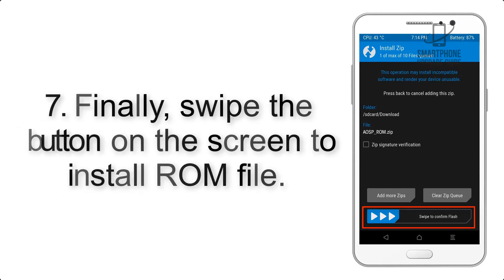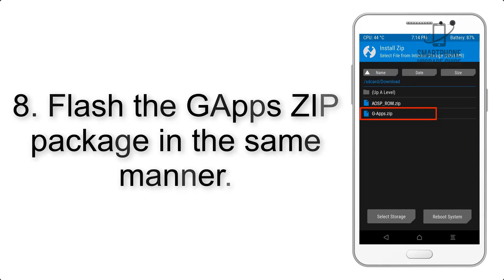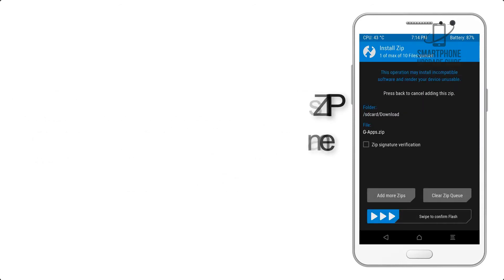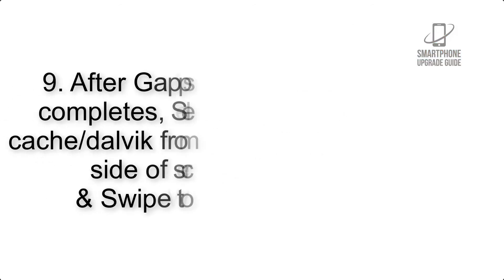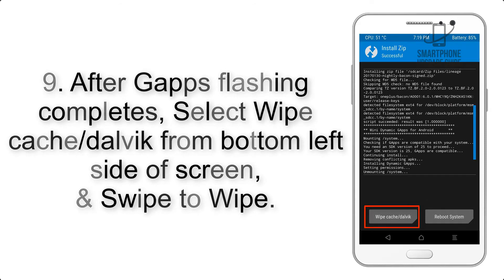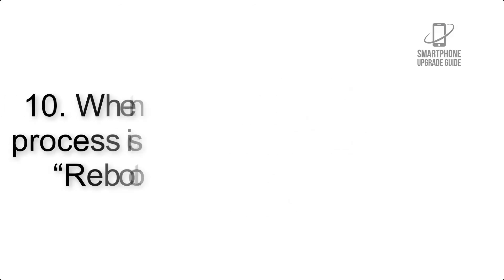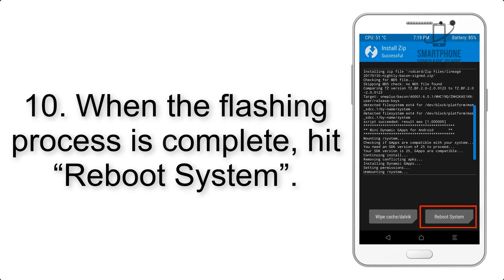Step 7: Swipe the button on the screen to install the ROM file. Step 8: Flash the GApps zip package in the same manner. Step 9: After GApps flashing completes, select Wipe Cache and Dalvik from the bottom left side of the screen and swipe to wipe.